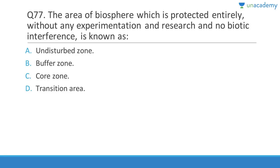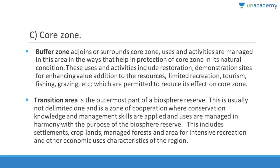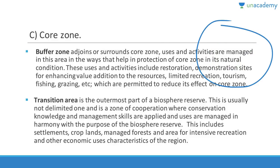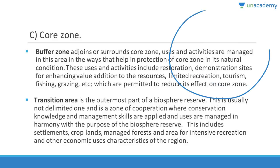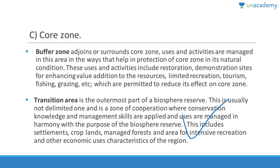Question 77: The area of a biosphere reserve that is fully protected with no experimentation, research, or biotic interference is called the core zone. The three layers are: innermost is the core zone, then the buffer zone surrounding it, and the outermost is the transition zone. The transition zone is where all human activities — settlements, croplands — take place. The buffer zone allows restricted activities like limited recreation, tourism, fishing, and grazing to reduce impact on the core zone.